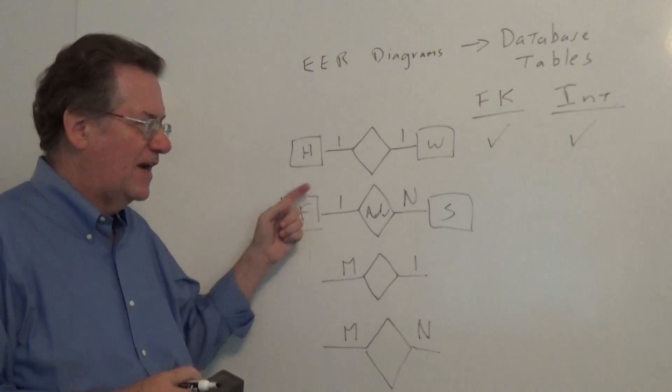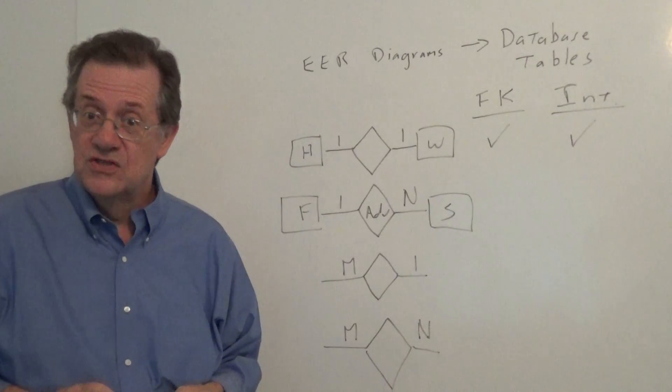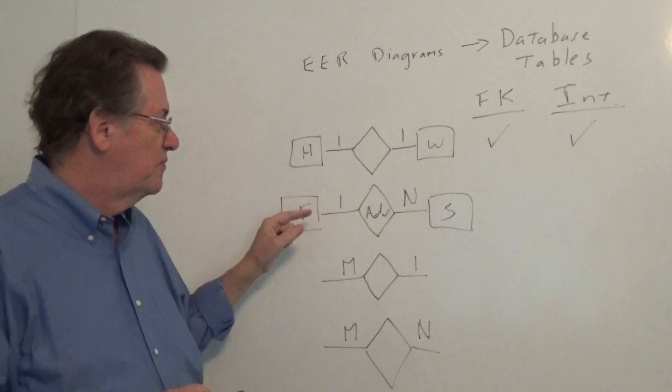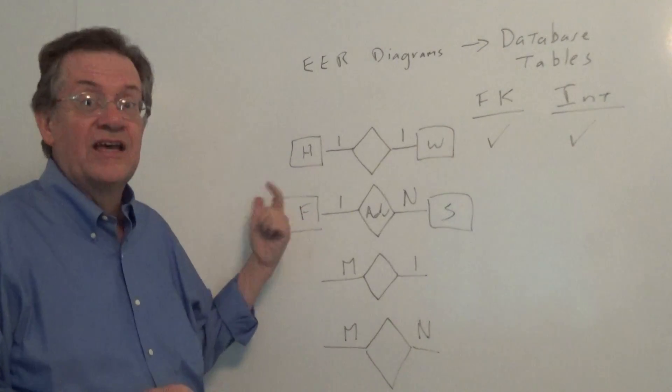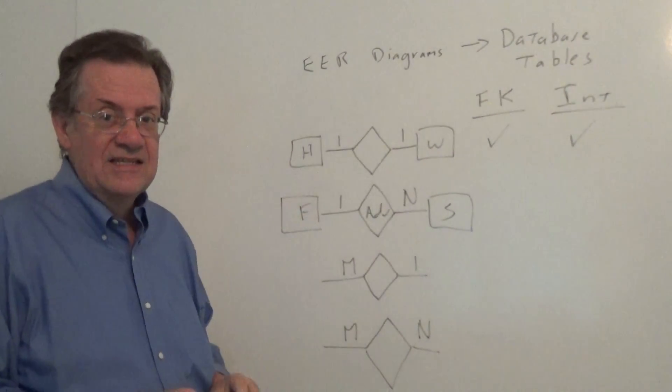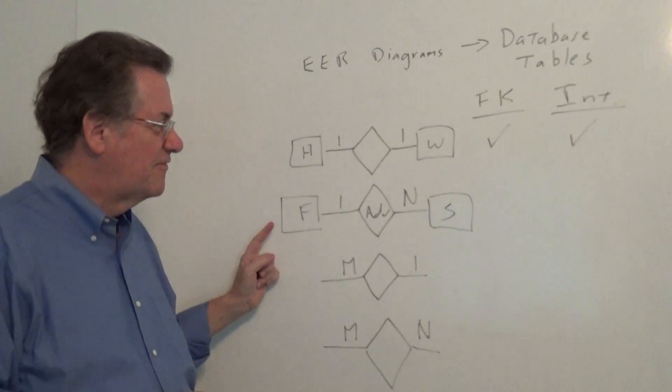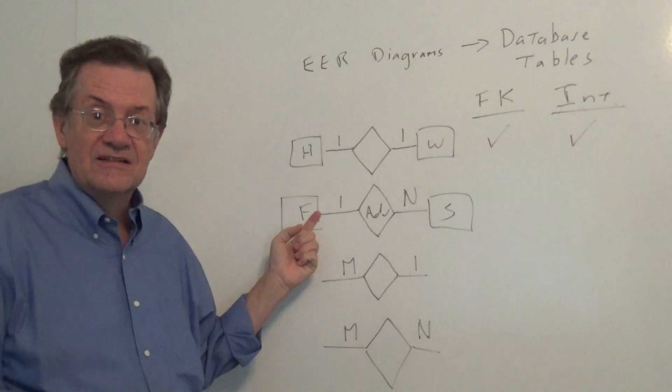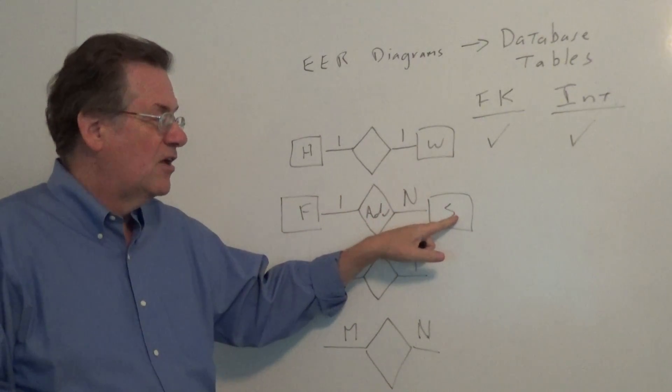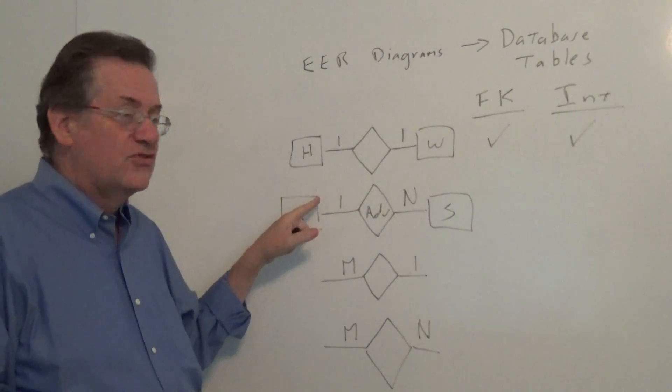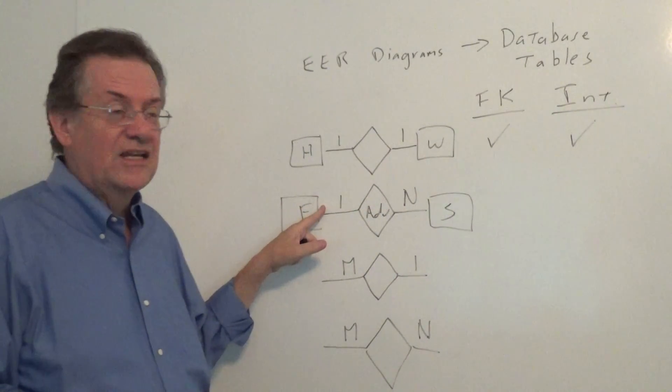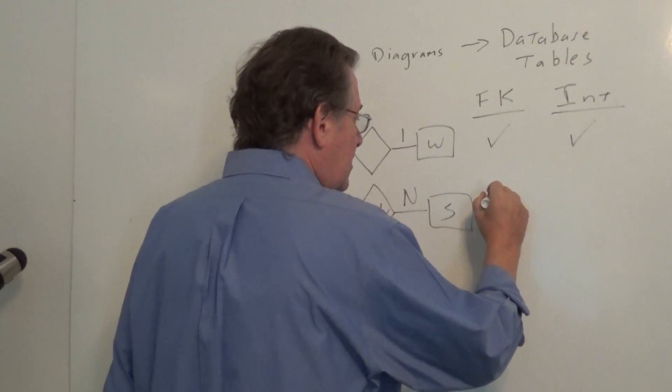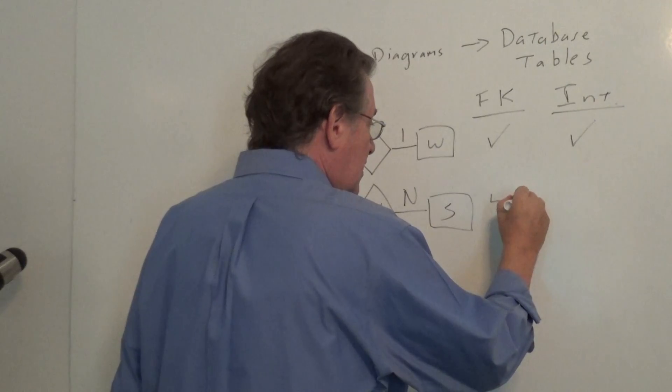Now, can we have a foreign key from faculty to student? And the answer is no, because if we have a foreign key, we don't know which student to put into that value in terms of advisee in the faculty table. So, we cannot have a foreign key going from left to right. Since the student only has one faculty advisor, we can have a foreign key from student to who's my advisor in terms of the faculty, maybe ID number. So, in this case, we can have a foreign key, but it has to go left to right.